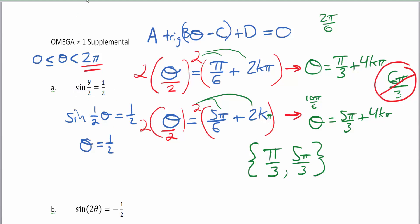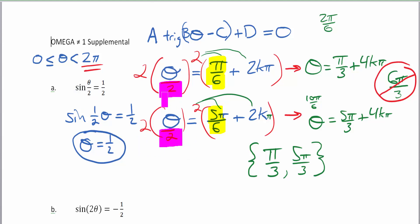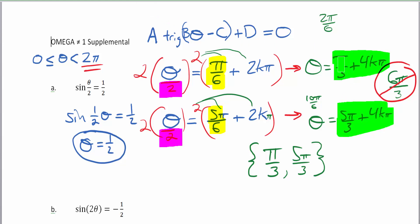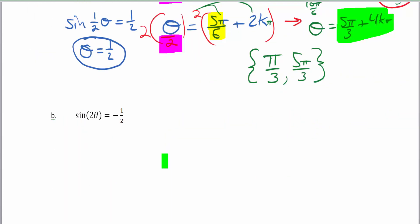To review the steps: first, drop all modifiers off theta and find when theta equals that value. Once you've found those values on the unit circle, put the modifier back onto theta. Then use an inverse operation to get rid of the modifier — but that changes the right-hand side of the equation. Finally, test whether the values are between 0 and 2π and list them as your possible answers. This takes practice, so let's do three more examples.